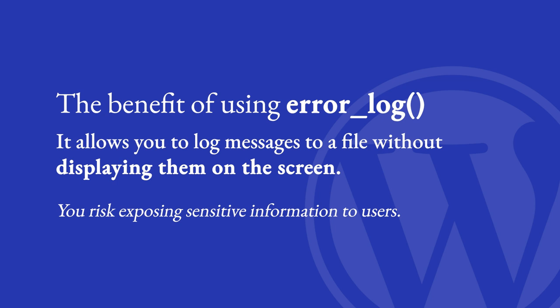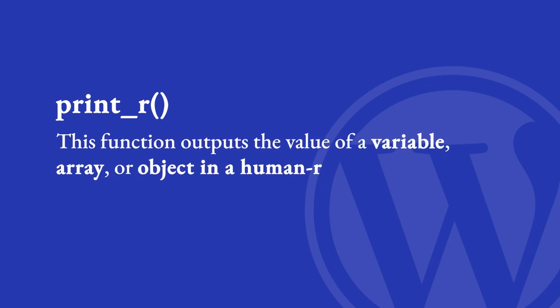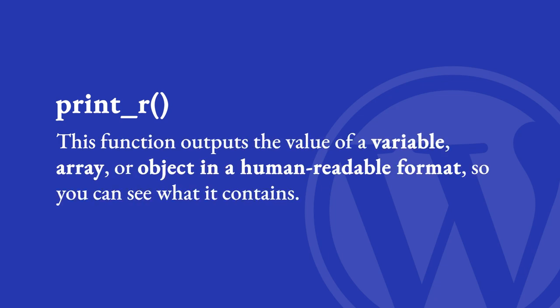Another useful function for examining the state of your PHP code is print_r. This function outputs the value of a variable, array, or object in a human-readable format so that you can see what it contains.